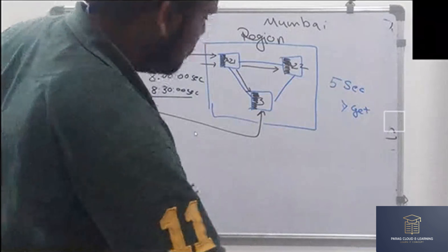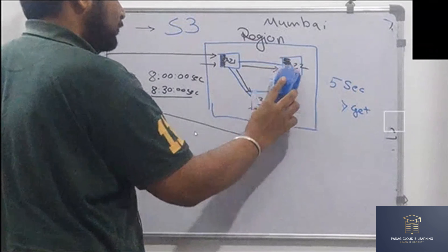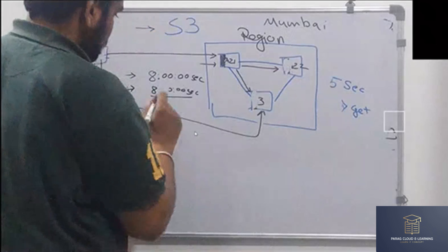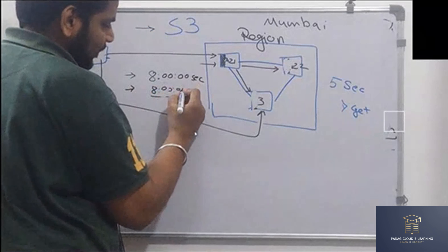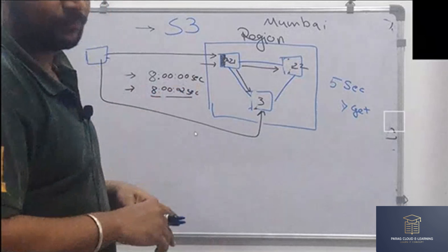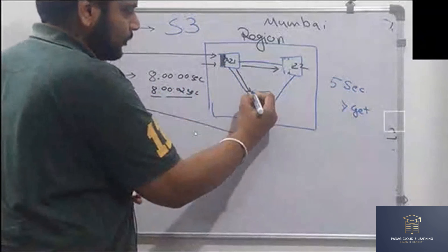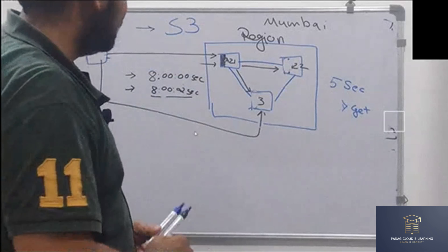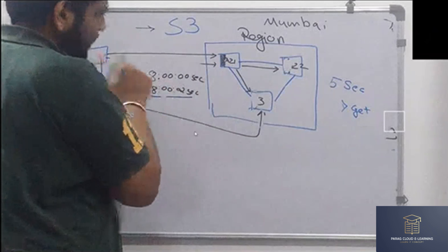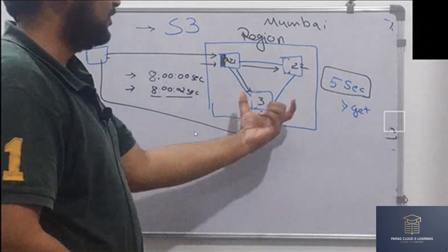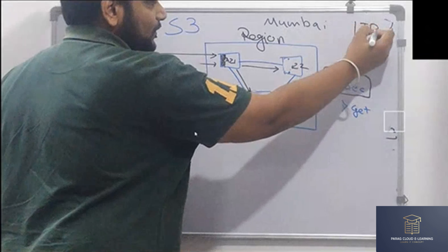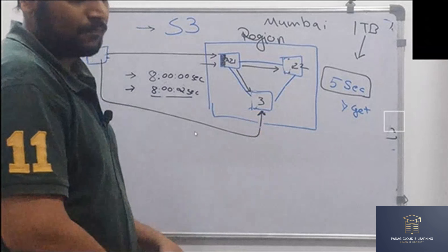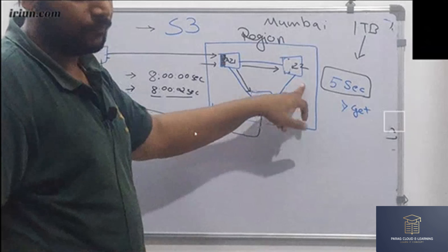Scenario two: you are not giving Amazon enough time to replicate the data. Instead of 8:30, you are asking Amazon to provide the file at 8:00:02 — just two seconds after upload. Will the data have replicated by then? It is taking five seconds — assume you have a very big one TB file and replicating it in five seconds is a pretty good speed.